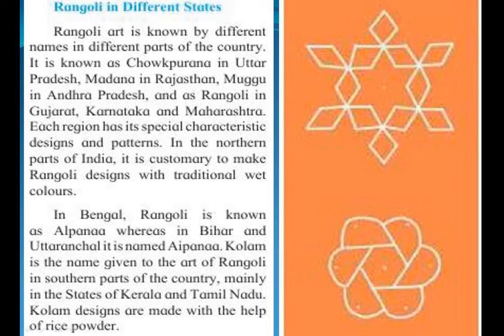In different states, Rangoli is given different names. In Uttar Pradesh, it is known as Chaukpurna; Madana in Rajasthan; Moghuk in Andhra Pradesh; and as Rangoli in Gujarat, Karnataka and Maharashtra. Each region has its special characteristic designs and patterns. In the northern parts of India, it is customary to make Rangoli designs with traditional wet colours.